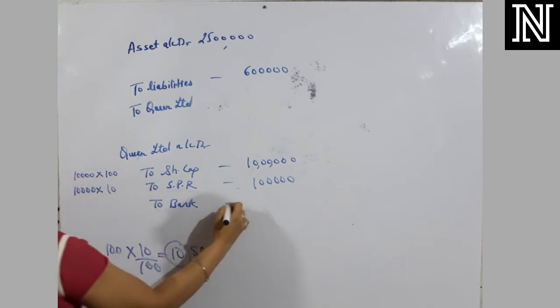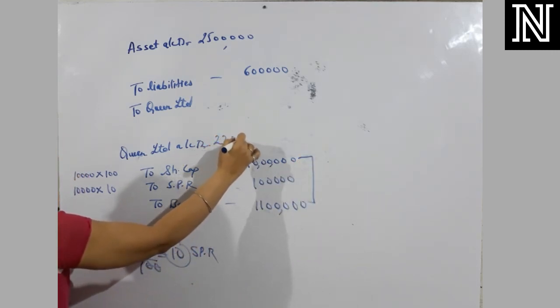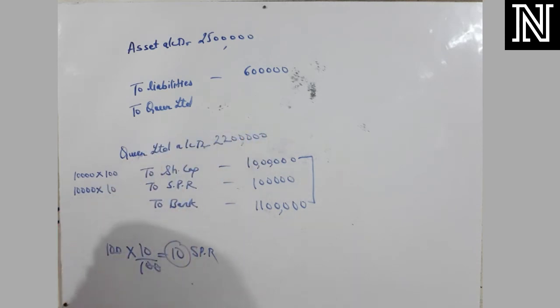Bank me unnhe kitna dene ko kaha hai 11 lakh. Ab in sub ko plus karo queen limited me kitna, 22 lakh. Betayye pehle second entry me kisi ko koji doubt hai. I am please dekho, first entry is clear. We have not written amount in queen limited because we are writing with the second entry.